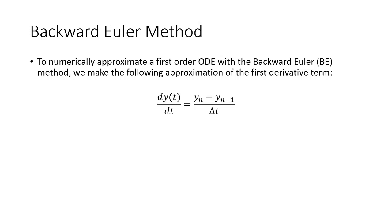Remember with the forward Euler method we used y of n plus 1 minus y of n. So here we're kind of taking our point and looking backwards to the previous point to determine the slope, if that makes sense.